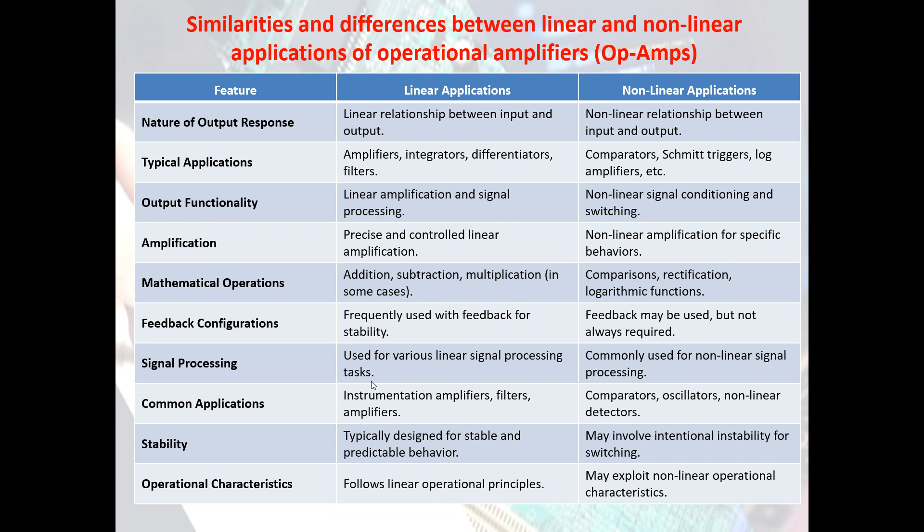As per feedback configuration, linear applications are frequently used with feedback for stability, while for non-linear applications, feedback may be used but is not always required. In terms of signal processing, linear applications are used for various linear signal processing tasks, while non-linear applications are commonly used for non-linear signal processing. Common linear applications include instrumentation amplifiers, filters, and amplifiers, while common non-linear applications include comparators, oscillators, and non-linear detectors.